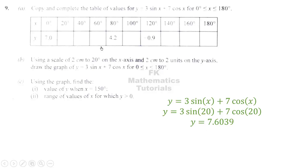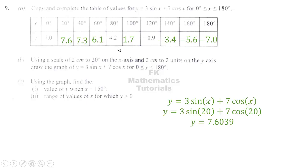When we simplify, we get 7.6039. Since the table has values to one decimal place, we round to 7.6. We repeat for x = 40, 60, and so on until we complete the whole table. I'm leaving that up to you, and you should get these values. After completing the table, you are done with part a.